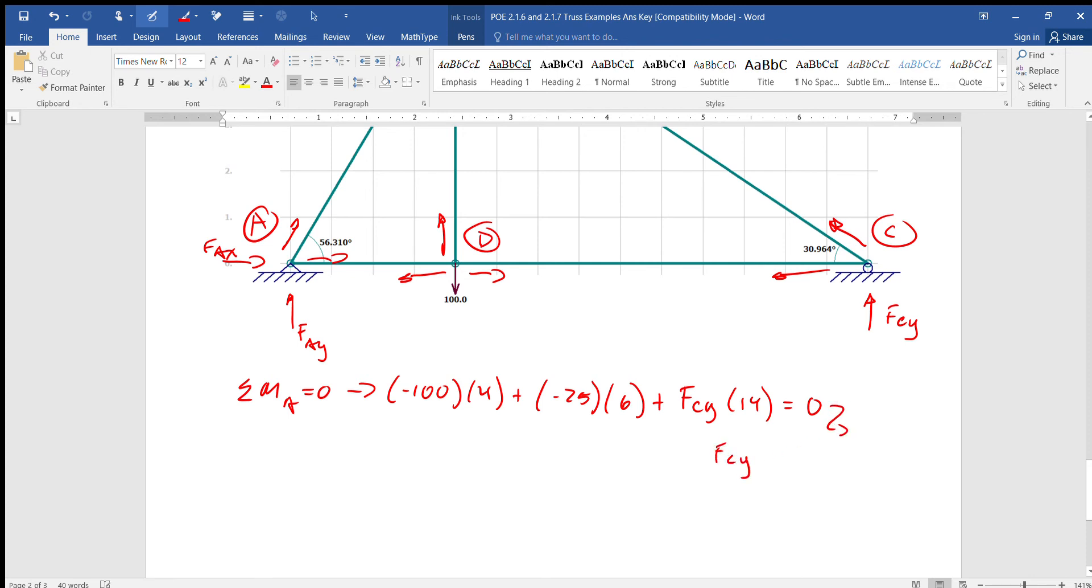So Fcy, I just want to write that there and save the space, so it's gonna be extra calculations. Fcy equals 39.3 pounds.